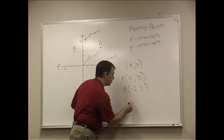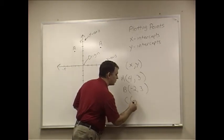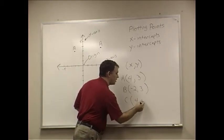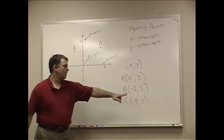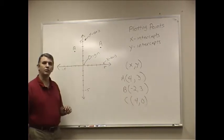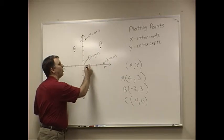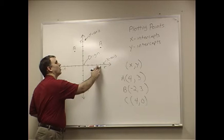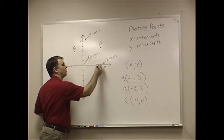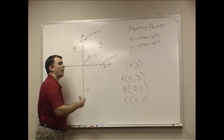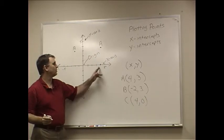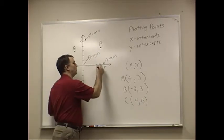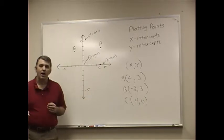And let's see. Let's do a point C. Let's do 4, 0. Now, zeros sometimes tend to confuse students. What this means is you go over 4, but since the y-coordinate is 0, you're not going up or down. You're staying right on the x-axis. So, that would be point C right there on the x-axis.